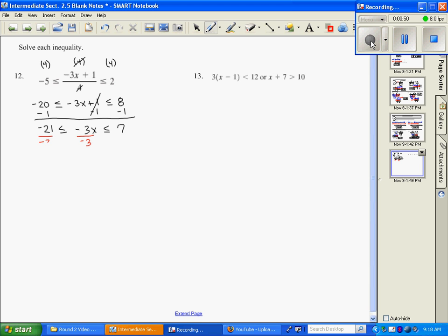But remember, we said if we divide an inequality by a negative number, we must flip the inequality symbols. So I have 7, I need to flip this one, then I'm going to flip this one as well, and I just have negative 7 thirds.